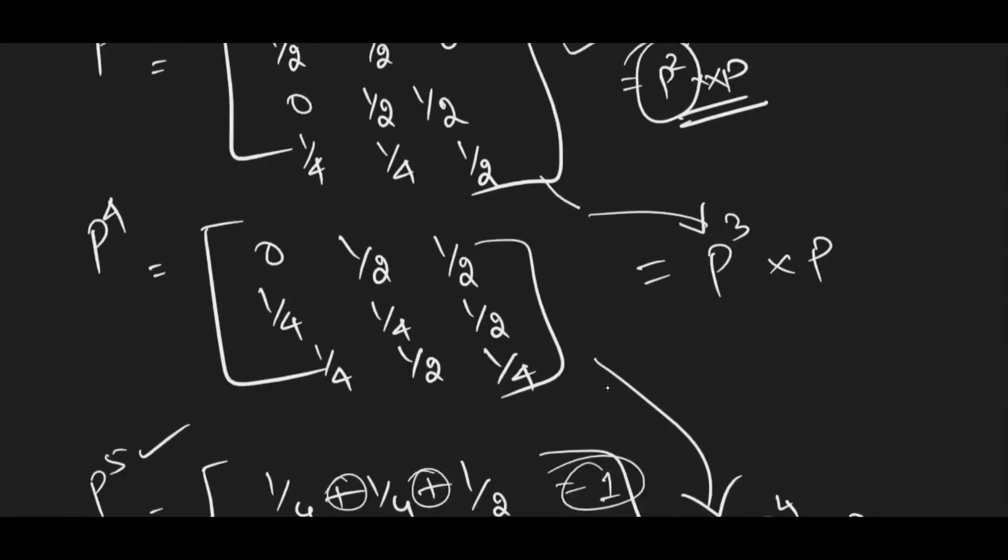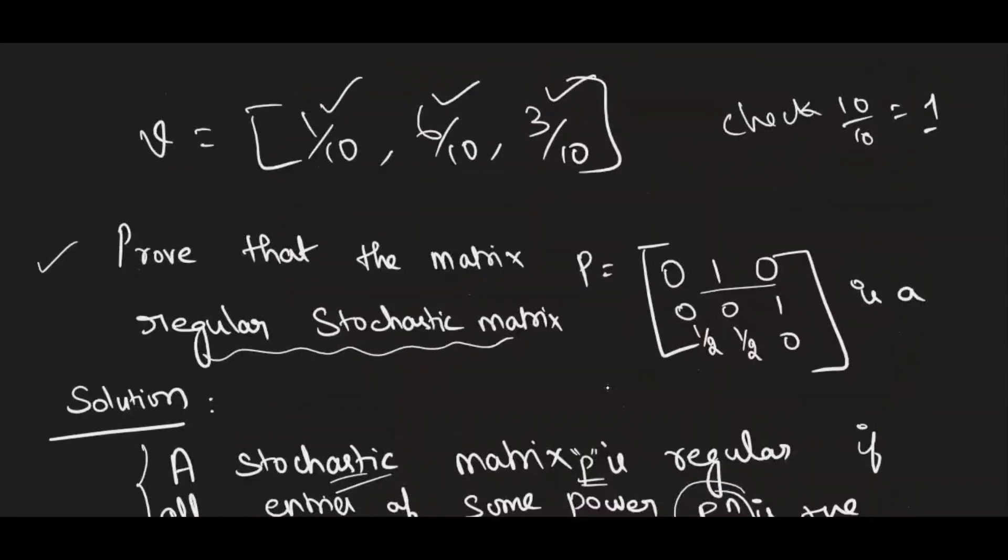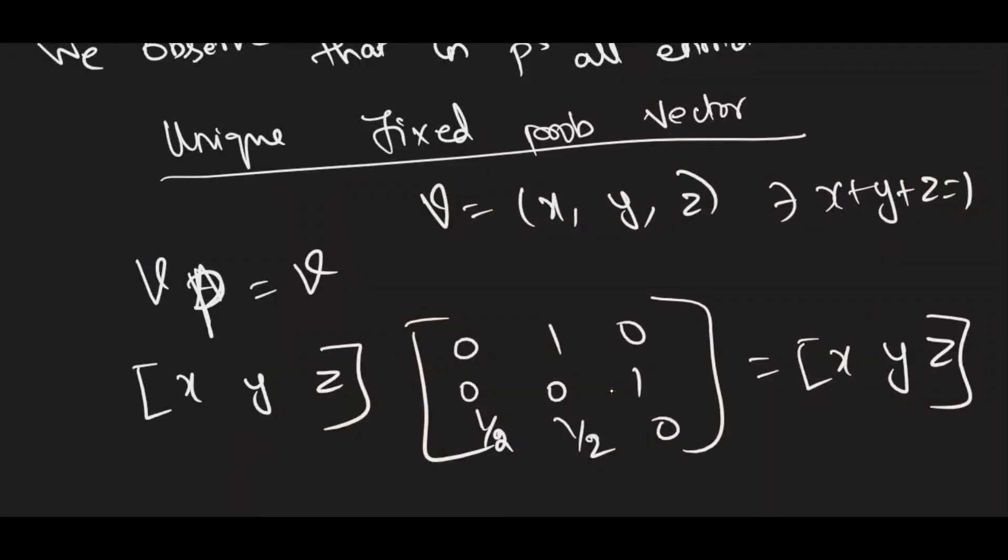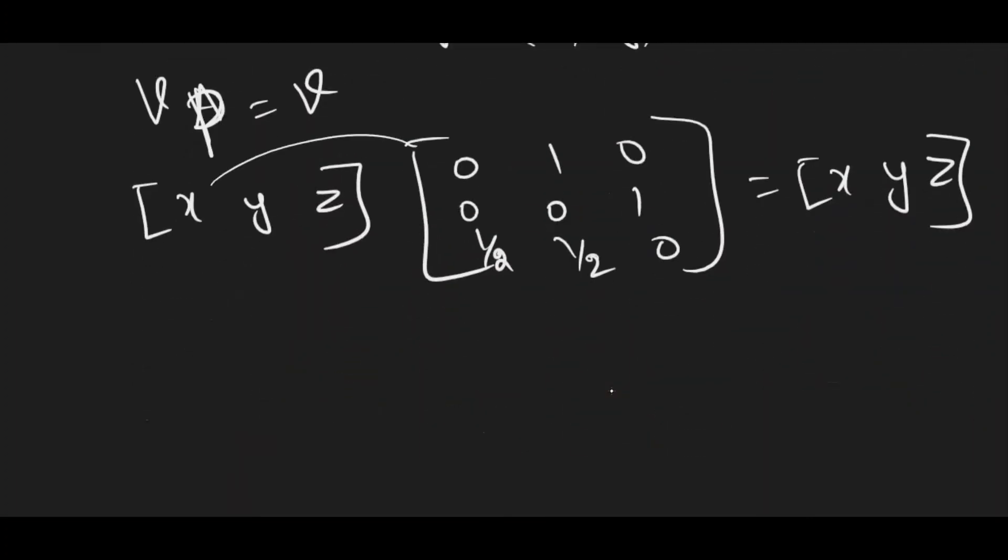You will just do the matrix multiplication. Previous problem, it was 2×2 matrix. So I have written this P. Since we have 3 values, we have written x, y, z. So now you have to do a normal matrix multiplication. This is 1×3 and this is 3×3. So your final answer will be 1×3. x×0 is 0, y×0 is 0, z×1/2, so I will write z/2. And then the second one x×1 is x, y×0 is 0 plus z×1/2 is z/2. And the last one x×0 is 0, y×1 is y, so you will get only y. So this is equal to [x, y, z].